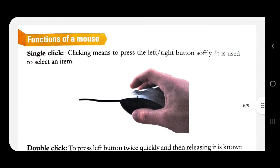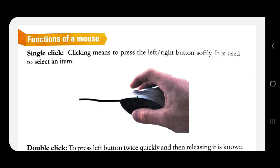Now let's come to the last part of the chapter: the functions of a mouse. The first function is single click. Single click means pressing the left or right button softly once. It is used to select an item.